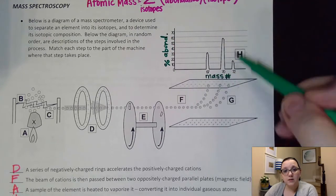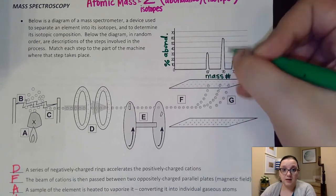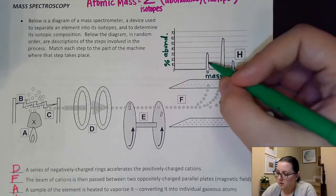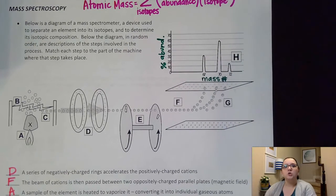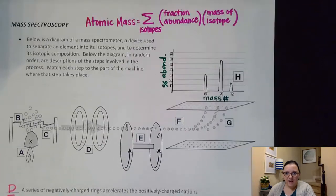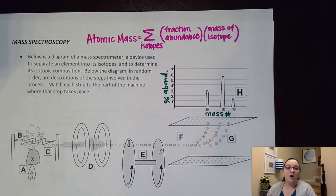So each height on this peak is representing how many particles are hitting. We had a lot of mass at 70 hitting, but only a little bit at 72, and kind of in between at 67. So we now have that information we're looking for, the mass of the isotope and the fraction abundance. So now, for this sample, we could go calculate what its average atomic mass would be.